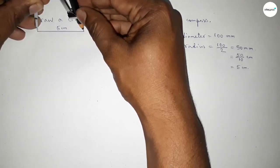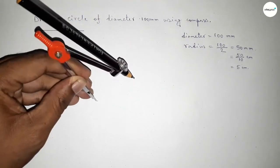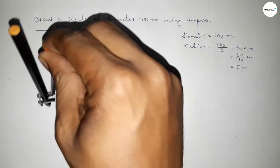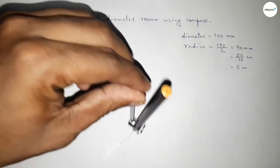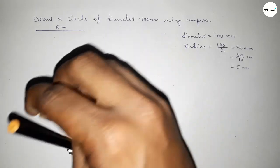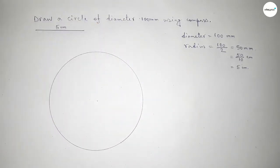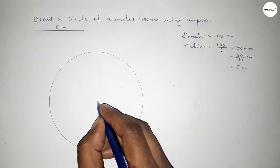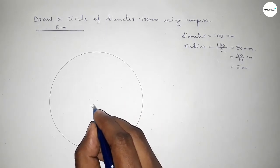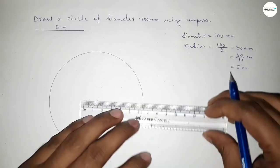Putting the compass on the point here, next drawing an arc by this way, and this is a circle. Taking here center O.